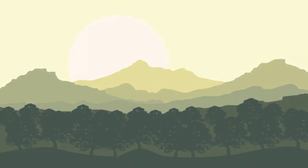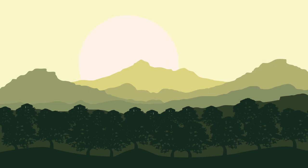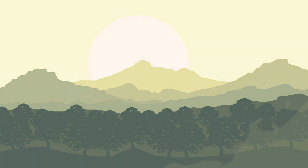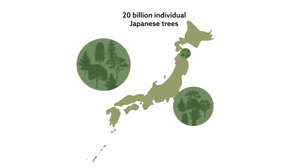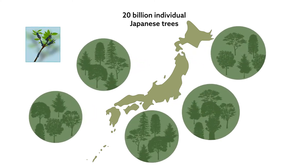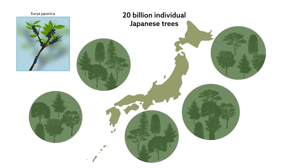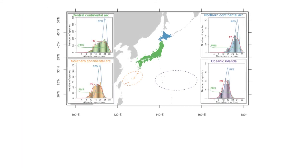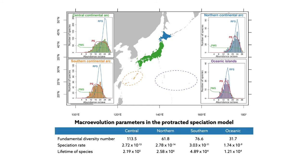The team applied their model to a large dataset of woody plant communities found in Japan. The results revealed that 20 billion trees are distributed throughout the Japanese archipelago, the largest species being Eurya japonica, or Hisakagi in Japan, with about 36 million individuals. Based on the biogeological settings of the archipelago, the team divided Japan into four ecoregions and estimated the parameters governing the macroevolution of species in these zones.